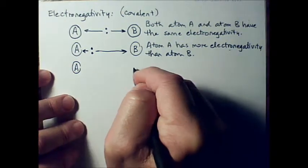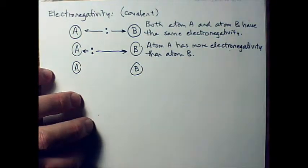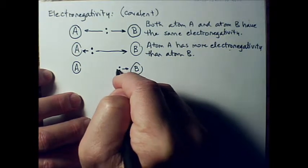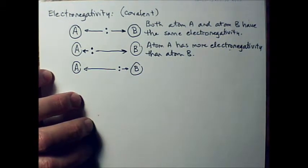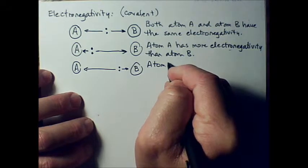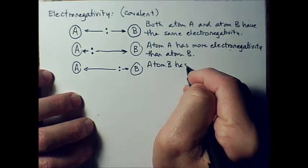Well, suppose A is not the one that's winning. Suppose it's B that's winning. The electrons are mostly over here instead of over close to A. What does that mean? Yeah, so now, in this case, then, atom B has more electronegativity.